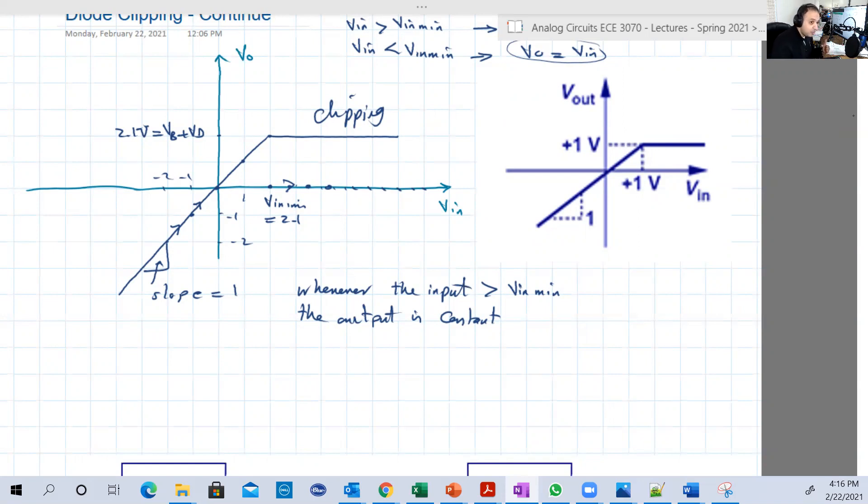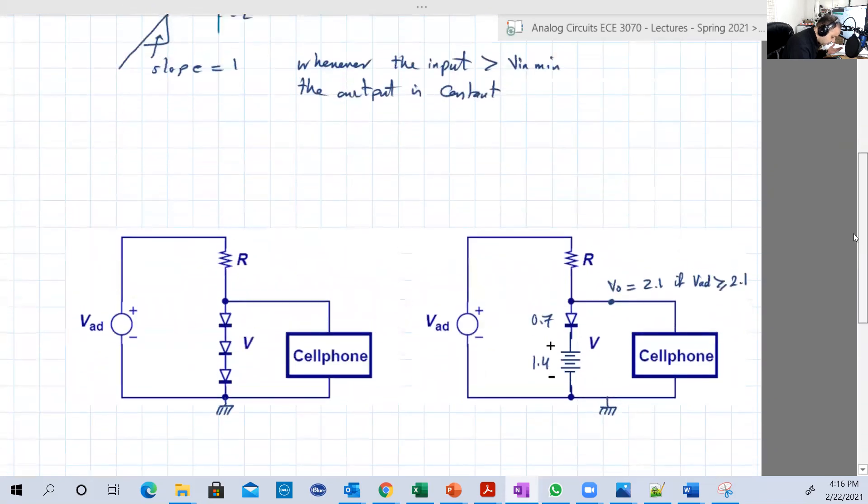So now let's assume that you have a circuit adapter, for example, like the ones that you use to charge your phone. And you need to charge your phone using a constant 2.1 volts, around 2 volts, let's say.